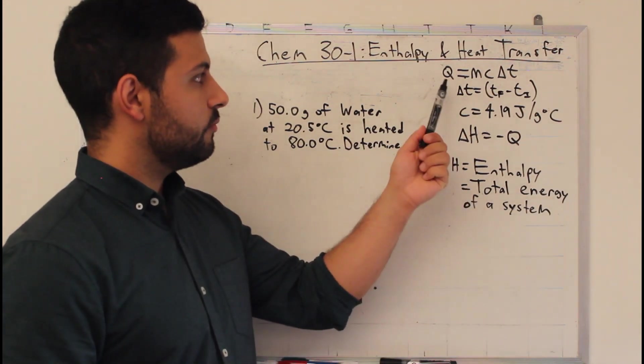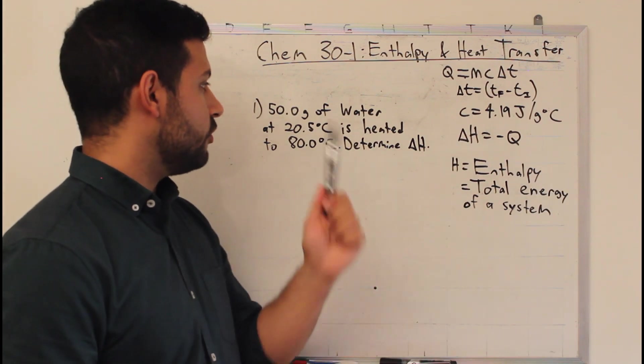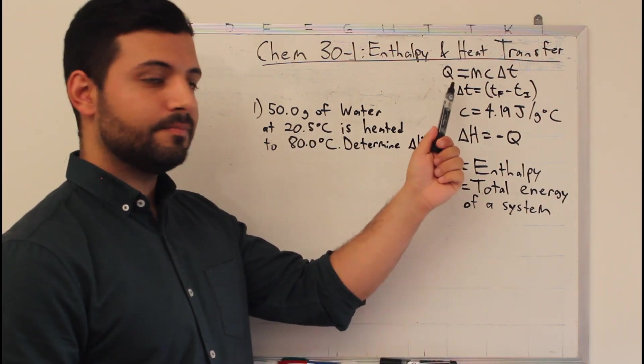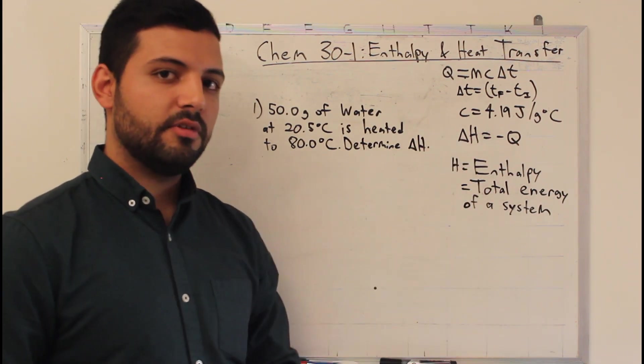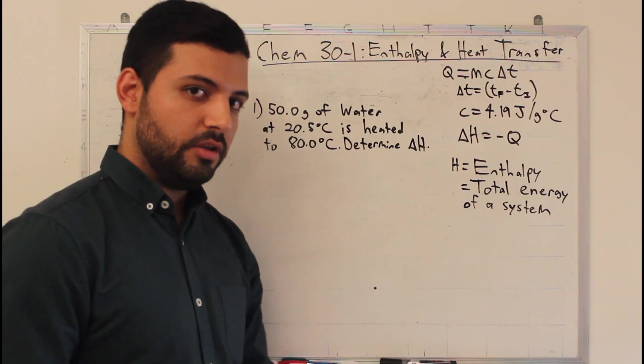We go back to our formulas, Q equals MC delta T, so using all this info, we can determine Q. And then from Q, we can determine delta H, seeing as delta H is just negative Q. It's the energy change within the system.